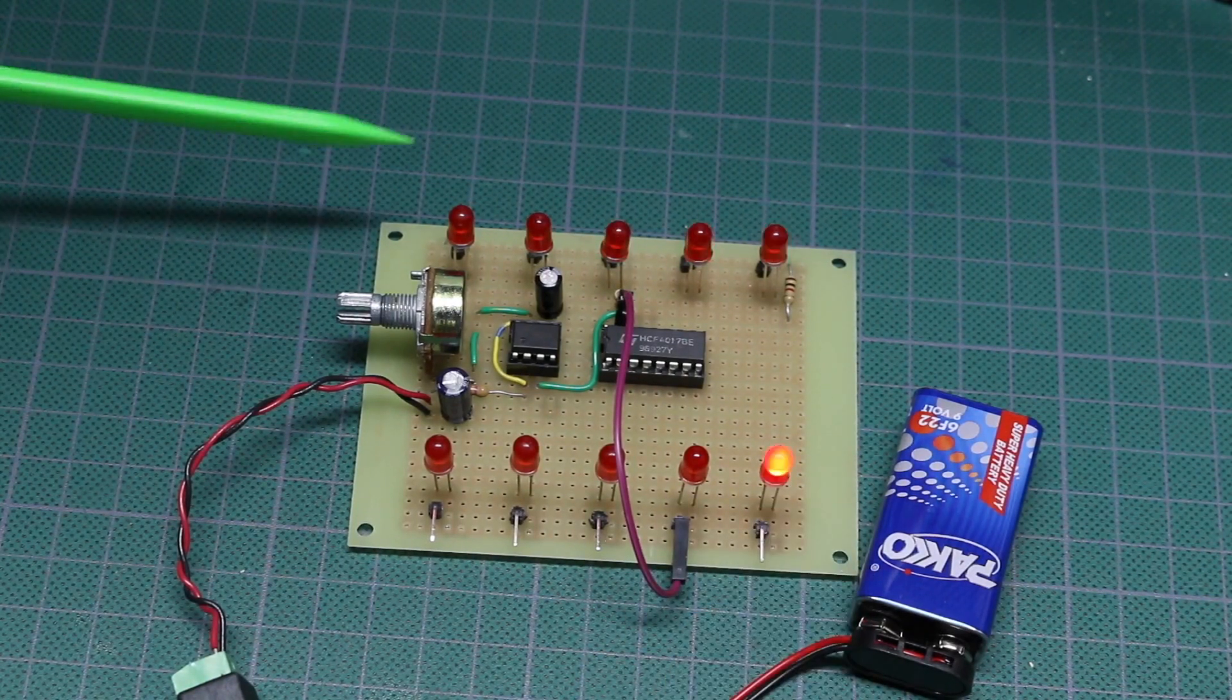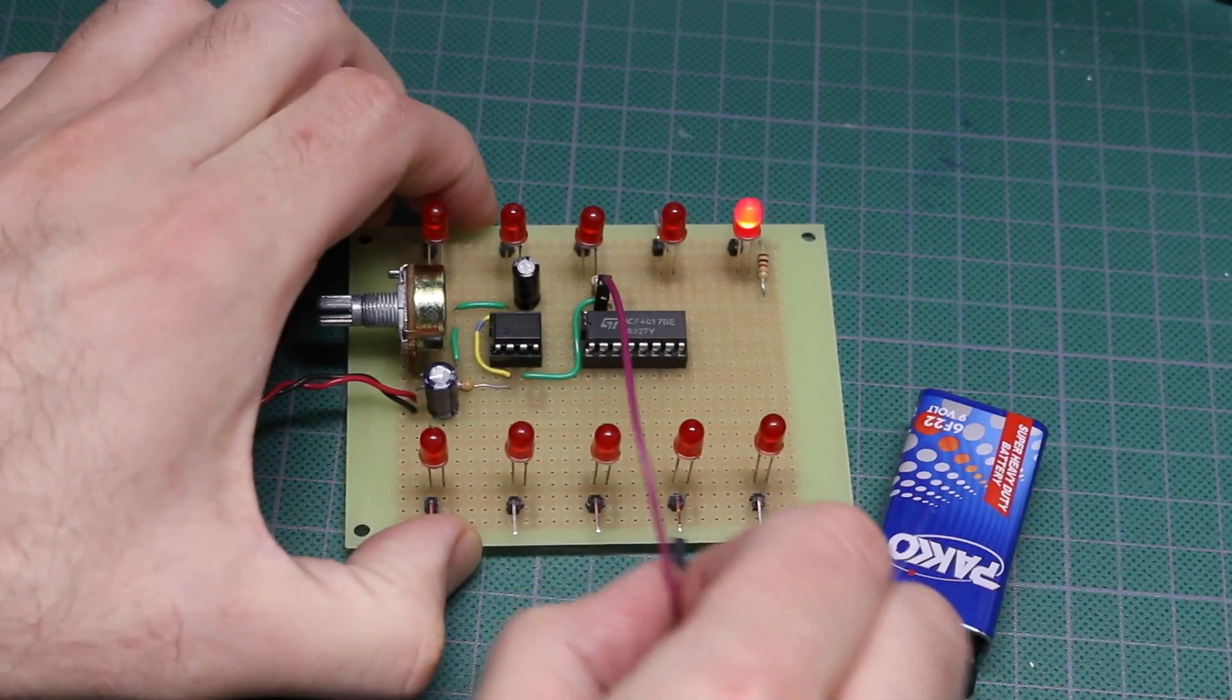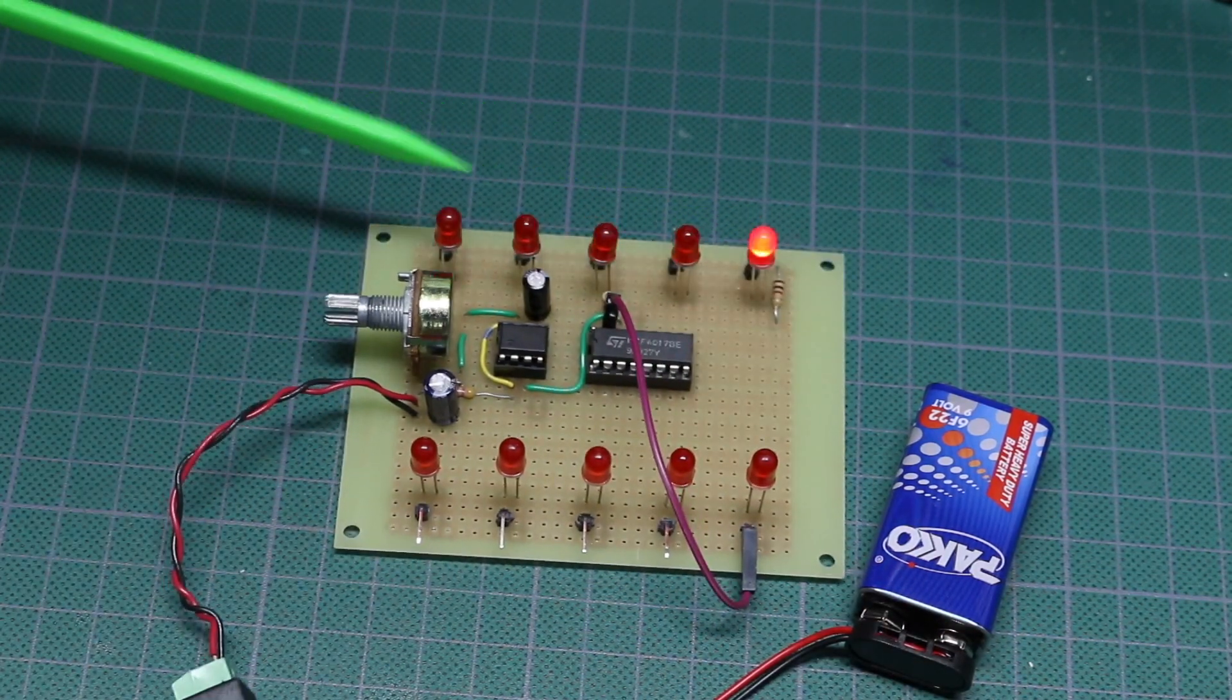So if I only want this to go the first five lights, like the prototype, I would put the reset pin on the sixth light, and now it just goes one through five over and over.